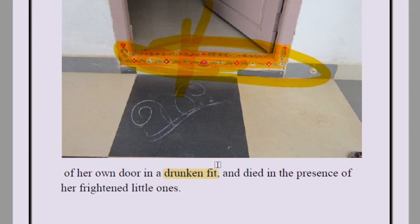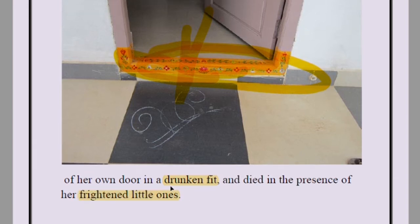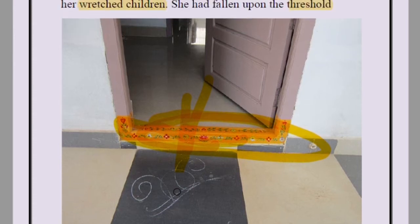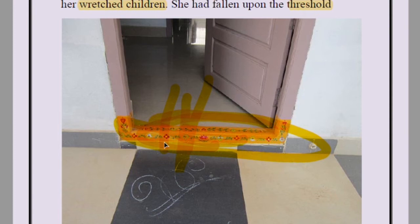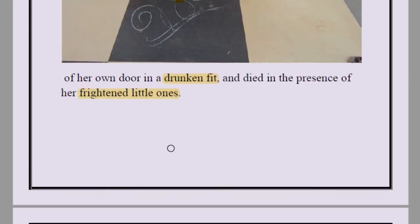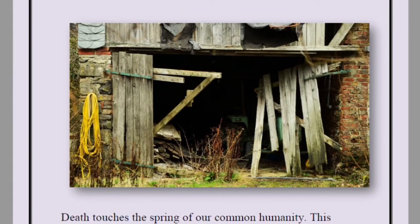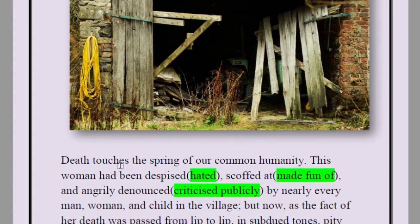She was in a drunken state and died in the presence of her frightened little ones, falling flat on the threshold. Now the three children have nobody to look after them. 'Death touches the spring of our common humanity' — when a person dies, even if you hated or insulted them, you feel some kind of sorrow. You feel sorry for them.